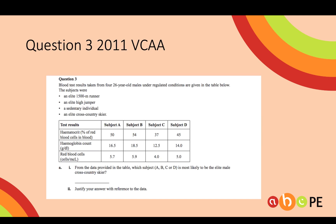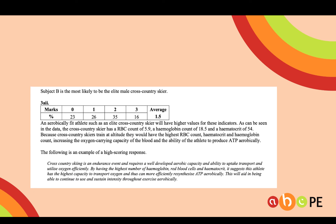Here's a VCAR question to demonstrate that concept. Subject B is the elite male cross-country skier — cross-country skiers are some of the greatest aerobic athletes on the planet. Only 16% of the state got this right. An elite aerobic athlete will have greater red blood cell counts, greater haemoglobin, and greater haematocrit, because they are able to carry more oxygen to the muscles, meaning they can produce ATP aerobically at a faster rate.